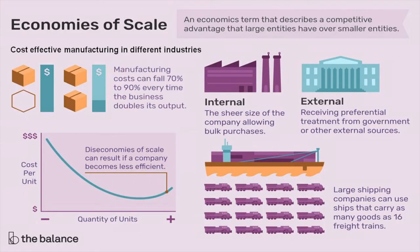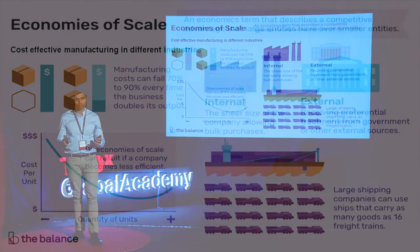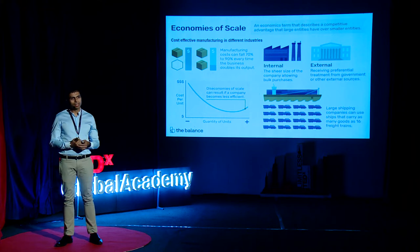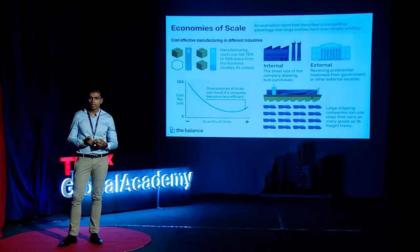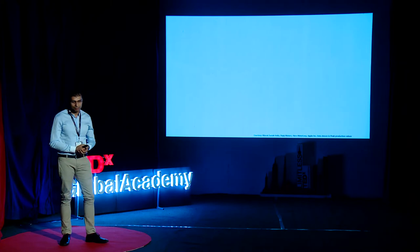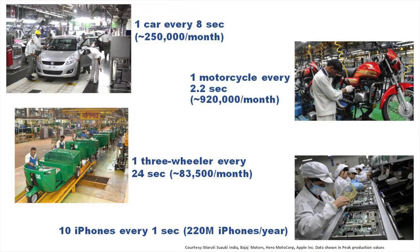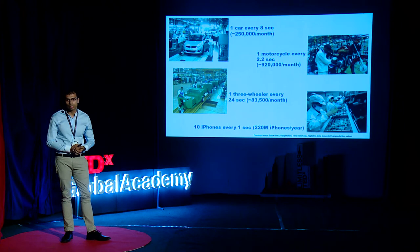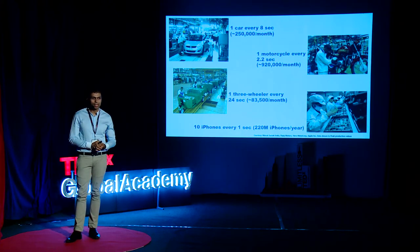Economies of scale and mass production have led to cost effective manufacturing of parts in the field of food industry, FMCG, automotive sector, and electronic sector. Let's have a look at the impact of mass production on our lives. Bajaj Auto makes a 3-wheeler every 24 seconds. Maruti Suzuki has a car coming out every 8 seconds. Hero MotoCorp has a motorcycle coming out every 2.2 seconds. Apple produces 10 iPhones every second. These are all peak production figures — this is the impact manufacturing has on our lives.